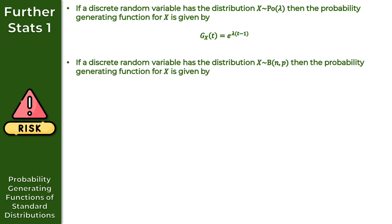For the next result, if we have a discrete random variable with X following a binomial distribution with parameters N and P, then the PGF for X in terms of T is equal to one minus P plus PT, all to the power of N.